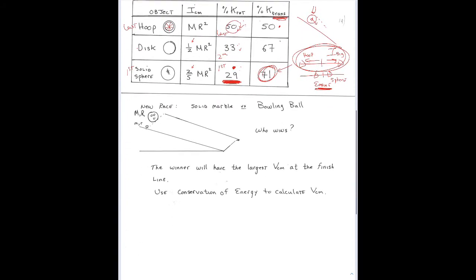Now I want to look at a race between a solid marble and a bowling ball — a small solid sphere versus a large solid sphere. The marble has small mass and small radius; the bowling ball has large mass and large radius. Both are the same shape. The winner will have the biggest speed at the bottom, so let's use conservation of energy to figure it out.